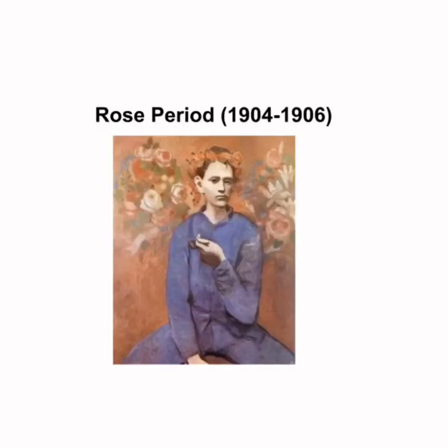In the works of the Rose period, I found that compared with the works in the Blue period, the figures and shapes in the paintings begin to take on some geometric edges and simplified structures.